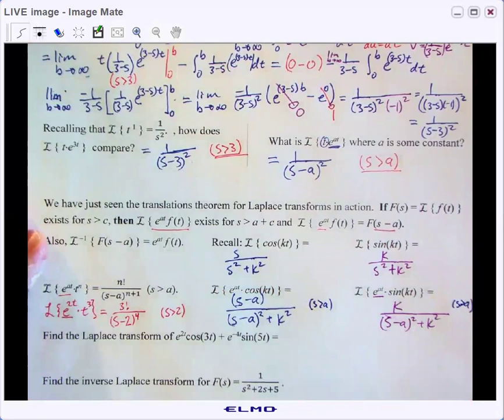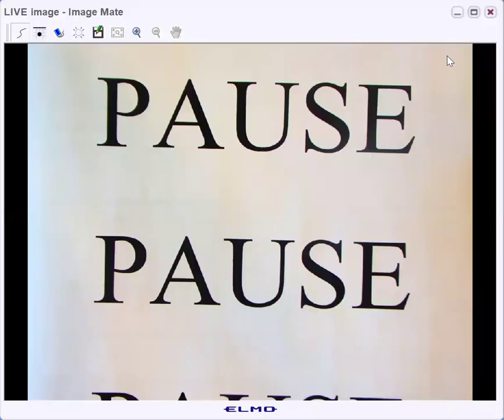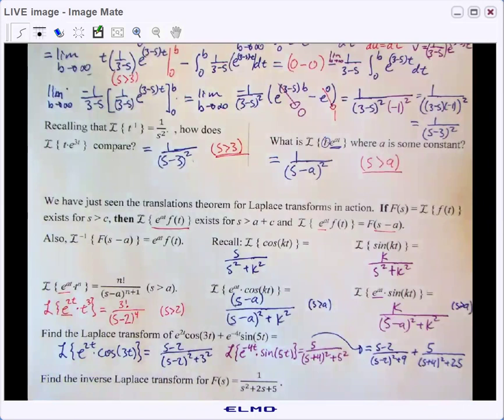So let's go ahead and let you try one here. Do the Laplace transform of e to the 2t cosine of 3t plus e to the negative 4t sine of 5t. And we'll even pause the video to let you give that one a try. Let's see how you did.